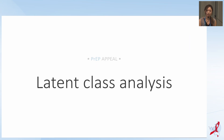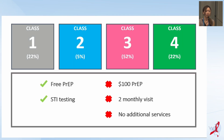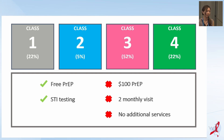Here are the results from the latent class analysis. Four classes were identified. In general, individuals in all classes prefer free PrEP and being offered STI testing as an extra service. They dislike paying 100 Australian dollars for PrEP or visiting a PrEP service every two months, and they dislike PrEP services that offer no additional services.